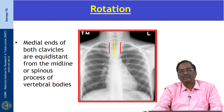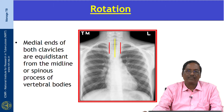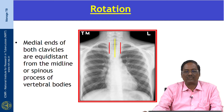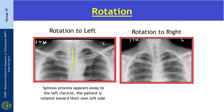Rotation means the patient was not positioned flat on the X-ray film. In a properly placed patient, the medial ends of both clavicles are equidistant from the midline or spinous process of the vertebral bodies. Here, rotation to the right is shown — the spinous process appears displaced toward the left clavicle, meaning the patient is rotated toward their own left side.